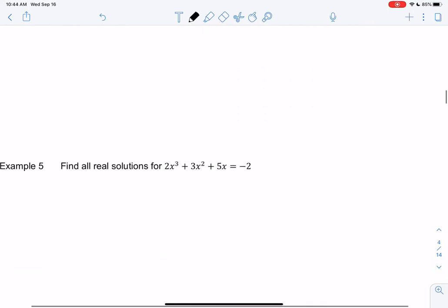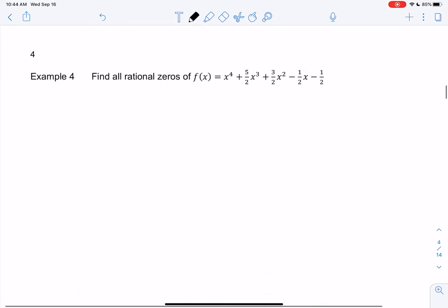All right, let's do one more rational zeros example with fractions. So basically we're trying to solve this equals 0. I have a feeling none of us want to deal with fractions, and so since we're solving for zeros, we can actually just multiply both sides. I'm going to multiply by 2 because that's my LCD.